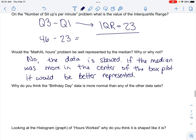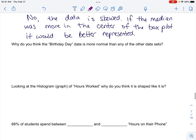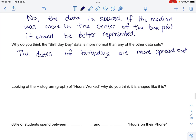And then why do you think the birthday day data is more normal than any of the other data sets? So if we go up here we look at the birthday day data it's pretty spread out, the box plots pretty well in the middle, the whiskers aren't too long, it's not skewed. If you think about real-life context, the fact that birthdays have to go between the number one and the number thirty-one, the dates of the people who answer will just be more evenly spread out. So the dates of birthdays are more spread out so the data is more normal.